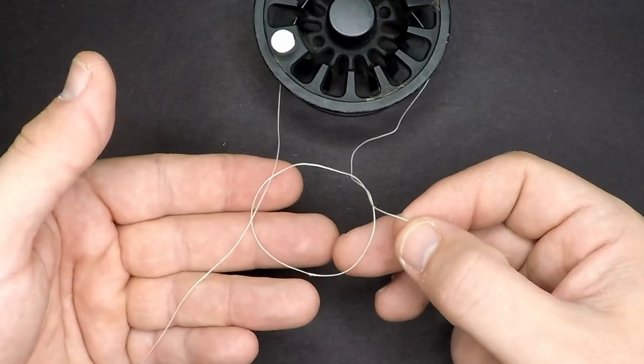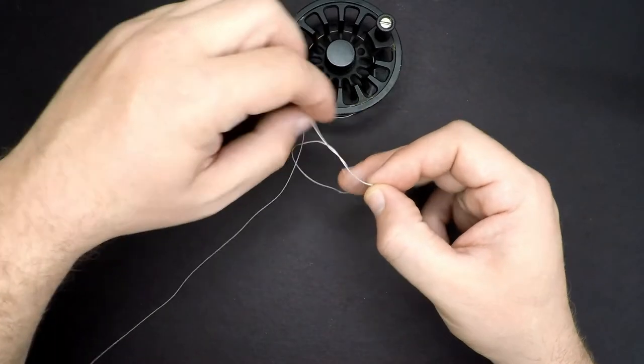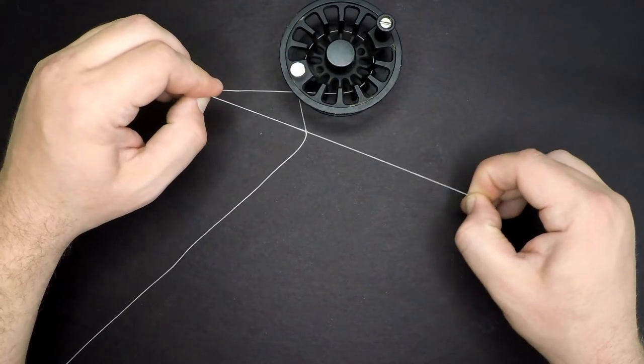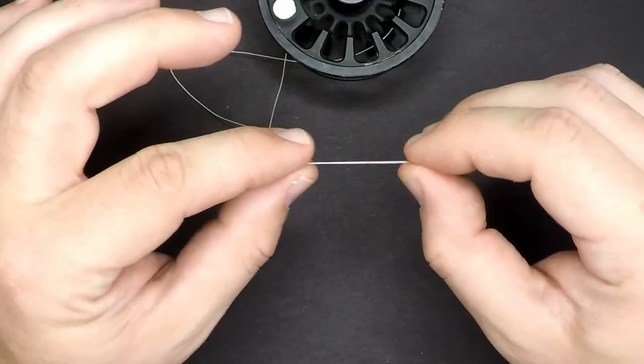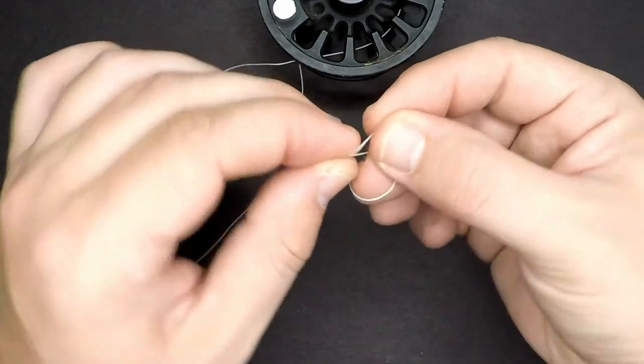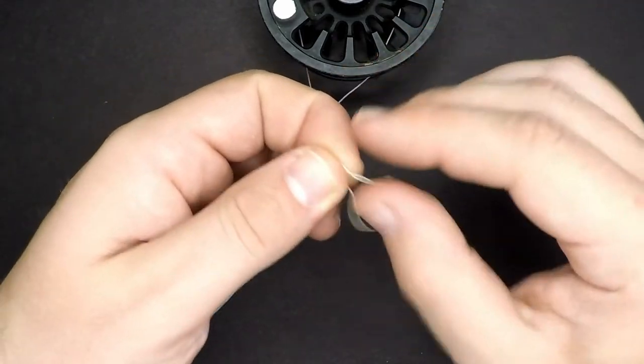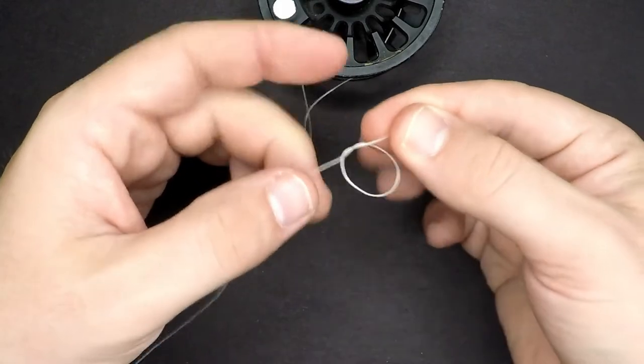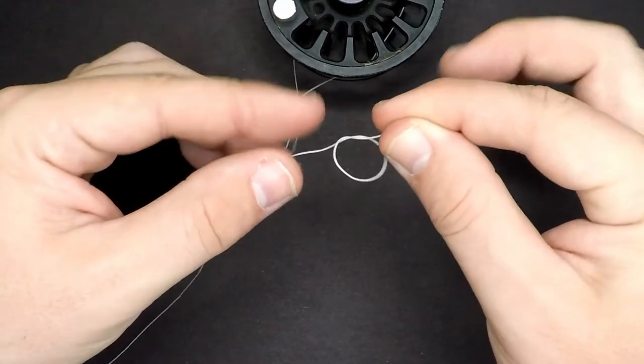Once I've done that, it's going to look like this. And now that I've created that overhand knot, I'm going to pull it tight on that main line. I'm going to pull that tight.